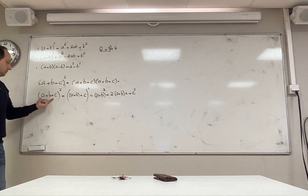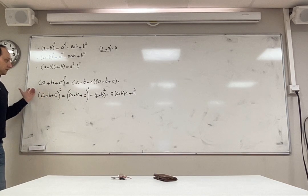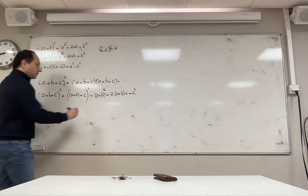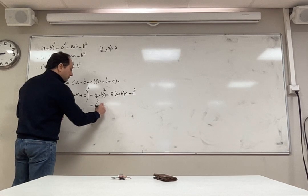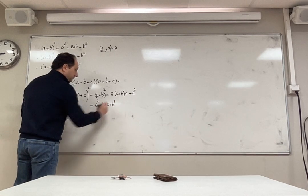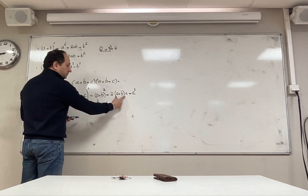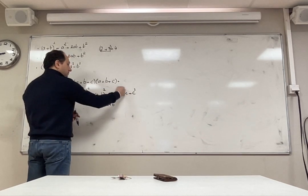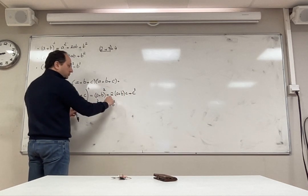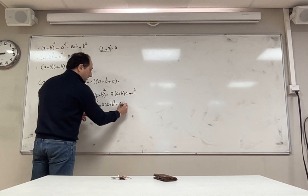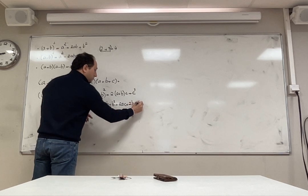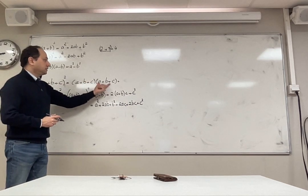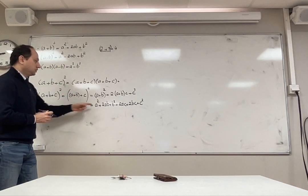When simplifying or expanding, you have to get rid of all pairs of brackets. For a plus b squared, I use the formula again: first one squared plus two times first times second plus second squared. For the middle term, there is no formula, so I multiply two from the left and c from the right — it becomes 2ac, then 2bc, and finally c squared.